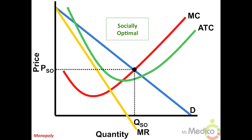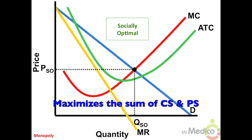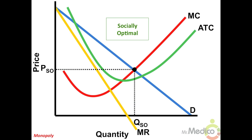Socially optimal regulation: if a monopolist were regulated to produce at the socially optimal level of output, it would produce where price or demand intersects the marginal cost curve — P equals MC. At this level of output, allocative efficiency is achieved and there is no deadweight loss. This point will maximize the sum of consumer and producer surplus. The graph shows the socially optimal price P-so and quantity Q-so.